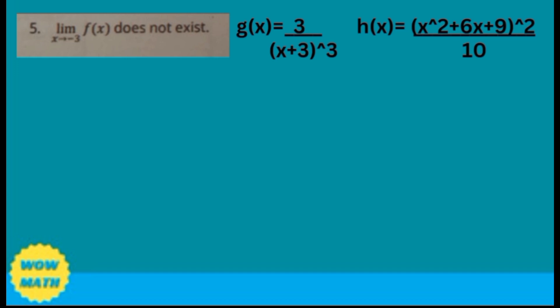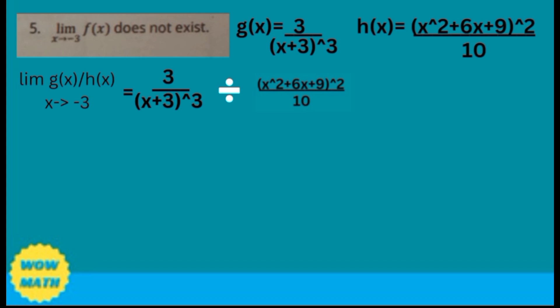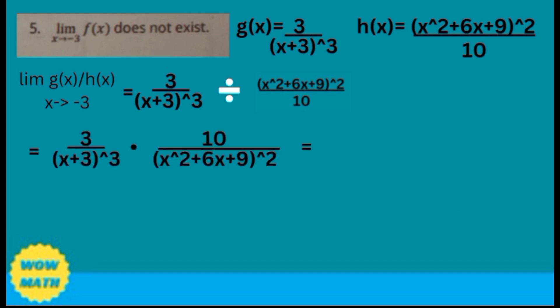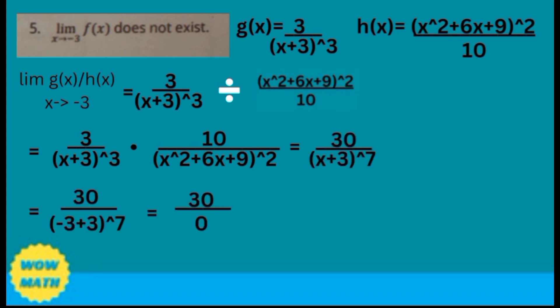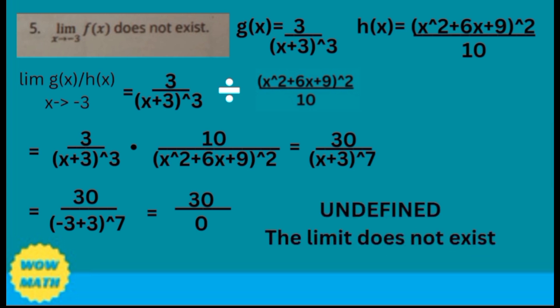For number 5, the limit of f of x as x approaches negative 3 does not exist. Using the same functions g of x and h of x, we will use division. Since we already used multiplication, we use a different operation for the does-not-exist case. We take the reciprocal of h of x, which is 10 over x squared plus 6x plus 9 squared, and multiply by 3 over x plus 3 cubed. This gives 30 over x plus 3 raised to 7. Substituting negative 3 for x gives negative 3 plus 3 raised to 7 in the denominator, making the denominator 0 and the numerator 30 — which is undefined. So the limit does not exist.